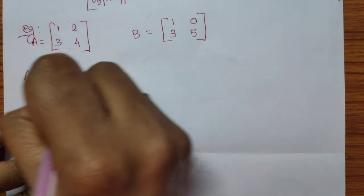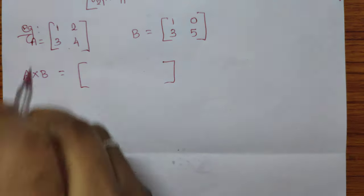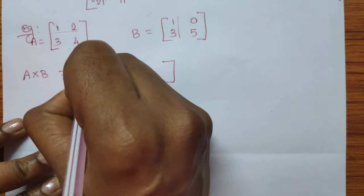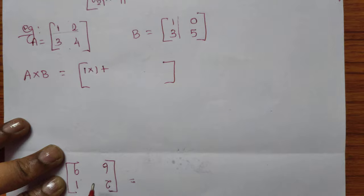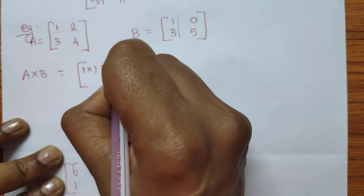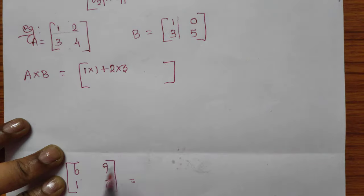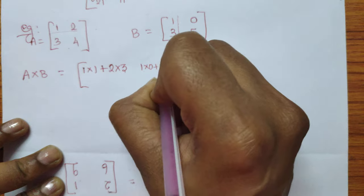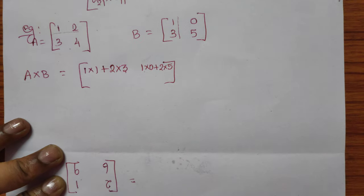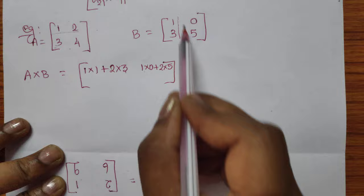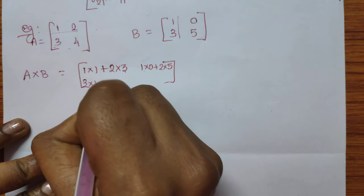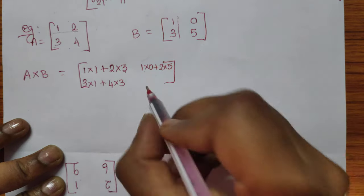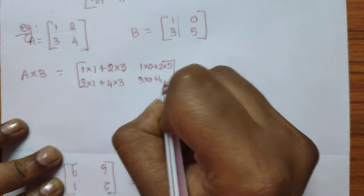A cross B: first row and first column gives 1 into 1 plus 2 into 3. First row and second column gives 1 into 0 plus 2 into 5. Then second row and first column gives 3 into 1 plus 4 into 3. Then second row and second column gives 3 into 0 plus 4 into 5.